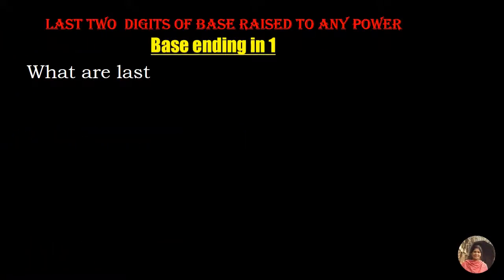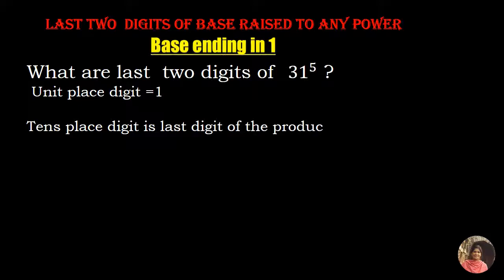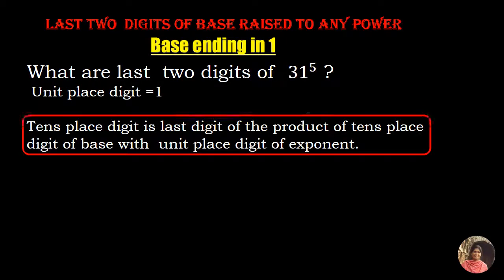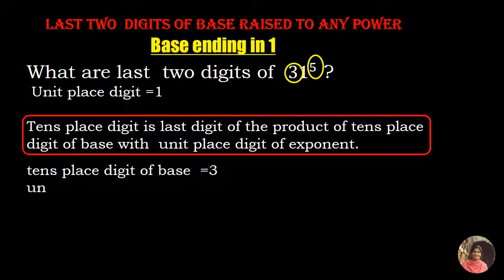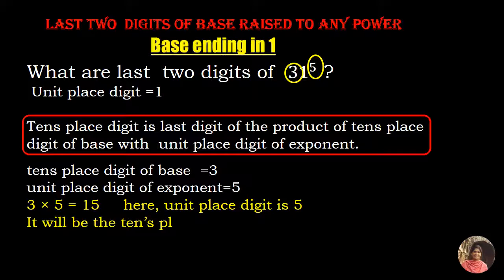Now we will go for last two digits when a number or base ends in 1. For example, 31 raised to the power 5 — what will be the last two digits? The unit's digit is 1. The tens digit is the unit's digit of the product of the tens digit of the base with the unit's digit of the exponent. Here, tens digit of the base is 3 and unit's digit of the exponent is 5. 3 into 5 is 15, and unit's digit of 15 is 5. So last two digits of 31 raised to the power 5 will be 51.